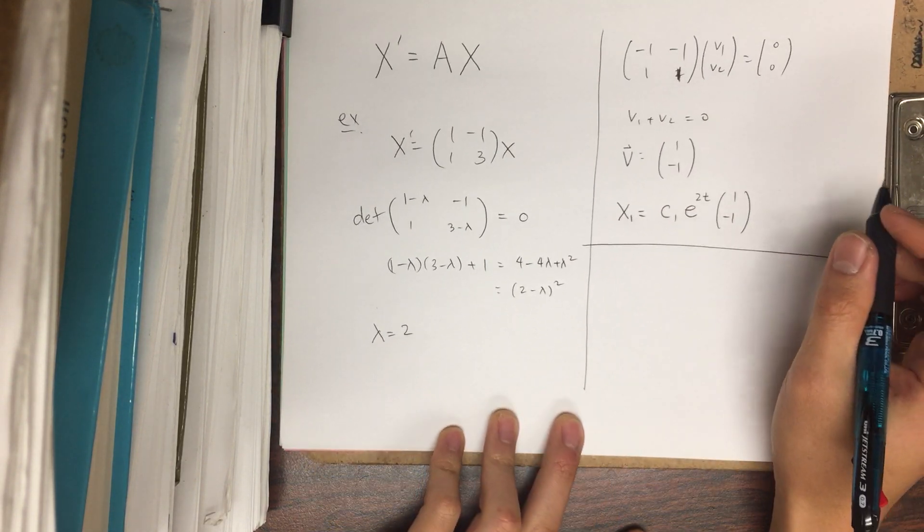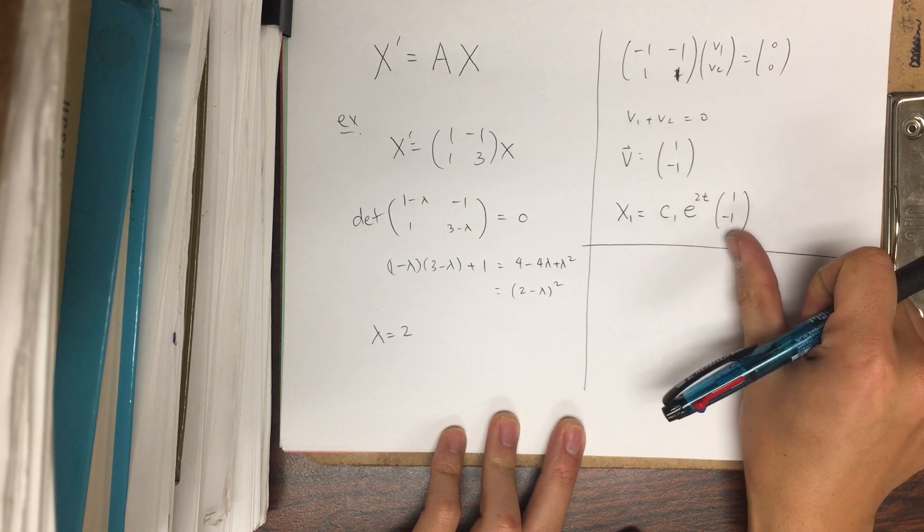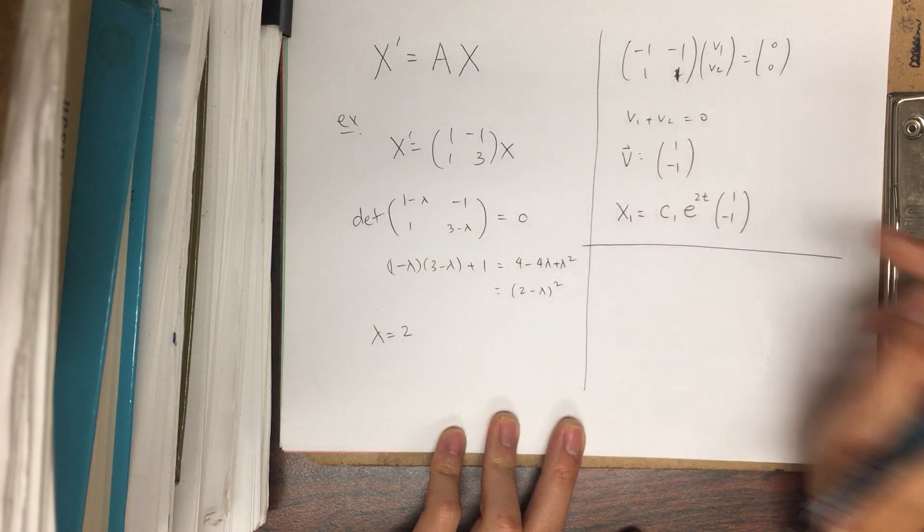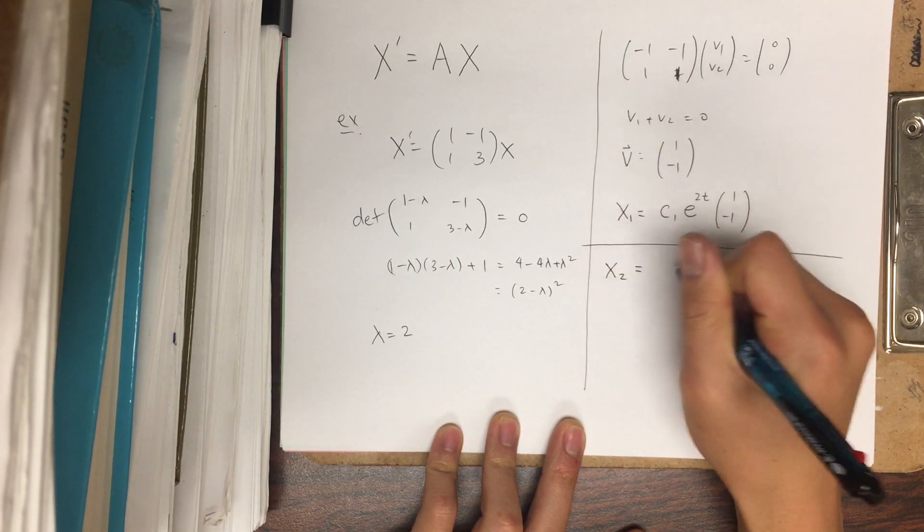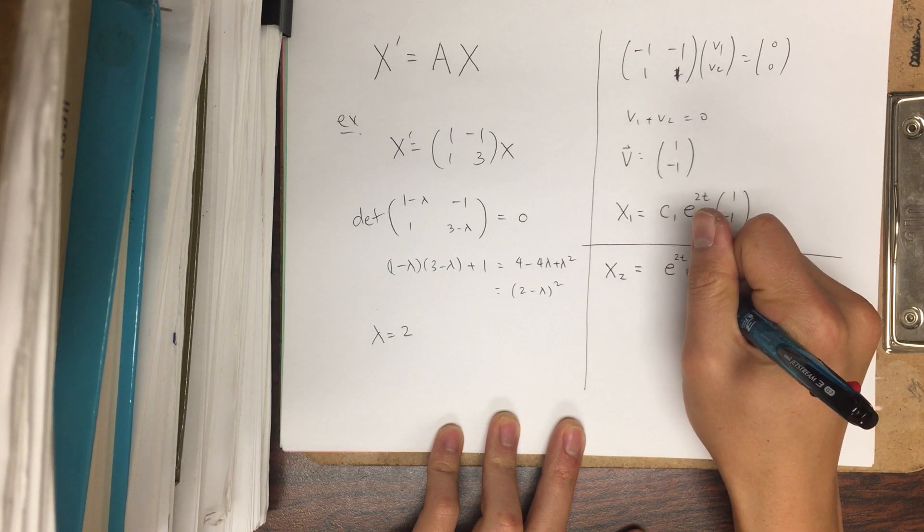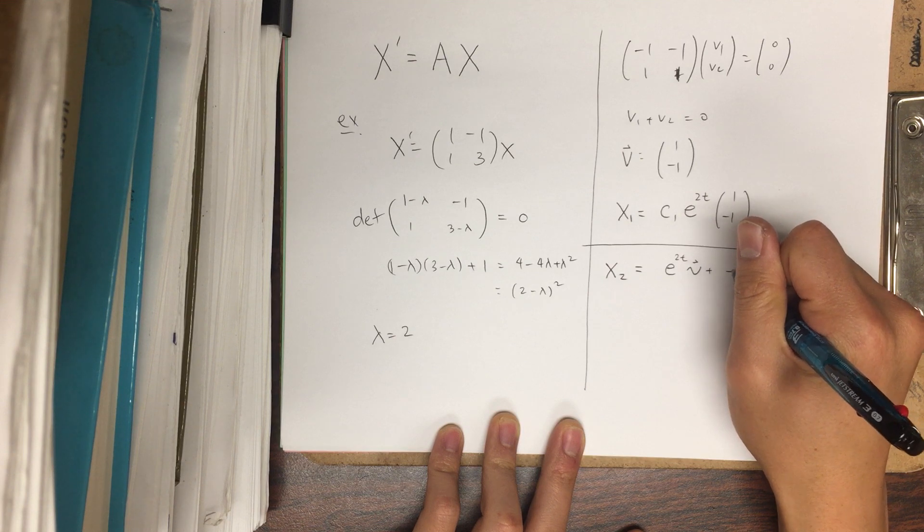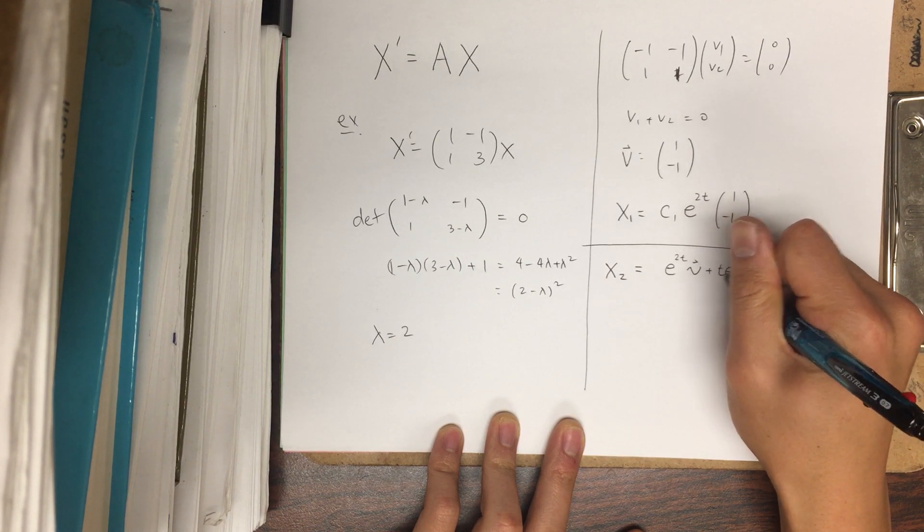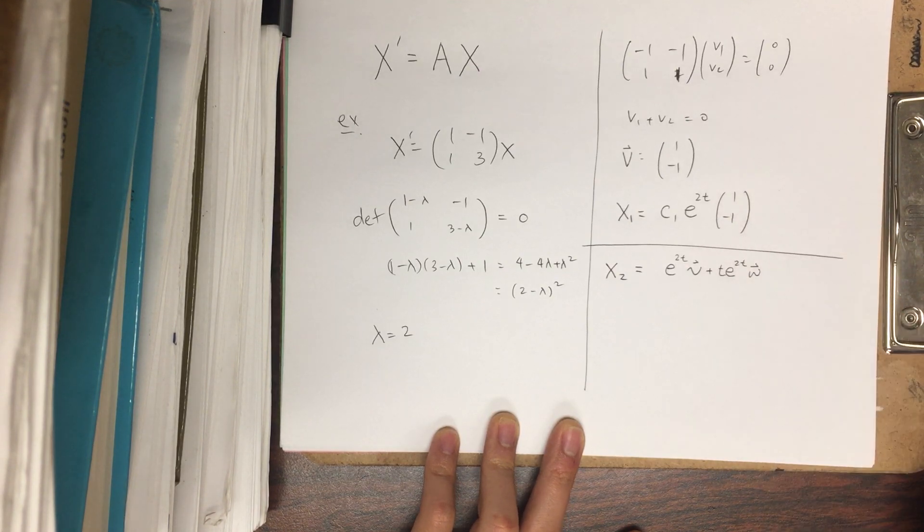And so how do we obtain that solution? Well, something of this form can't work because then we'll just do the same steps and we'll get the same answer. So the thing is we're going to guess that a second solution is of the form e^(2t) times some vector v plus t e^(2t) times another vector w.